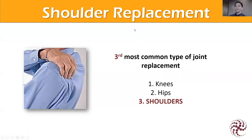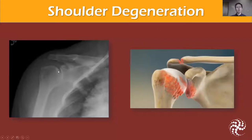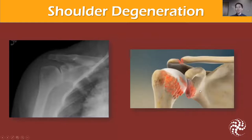After rotator cuff surgery — or if there's significant degeneration — that leads to shoulder replacement. There are generally two main indications: irreparable rotator cuff tears, where we're not able to lasso the tendon and repair it, and arthritis — wear and tear of that cartilage. You can see on the left X-ray the loss of joint space — the humerus is touching the socket, where normally there'd be some joint space. That leads to swelling and inflammation of the capsule, which causes pain and stiffness — what we call arthritis.